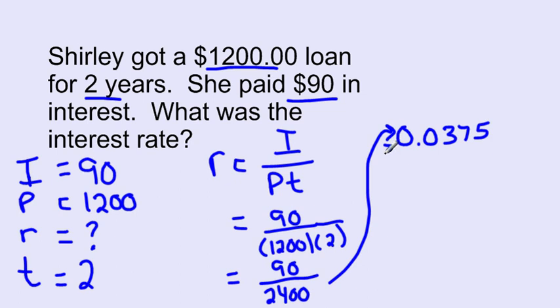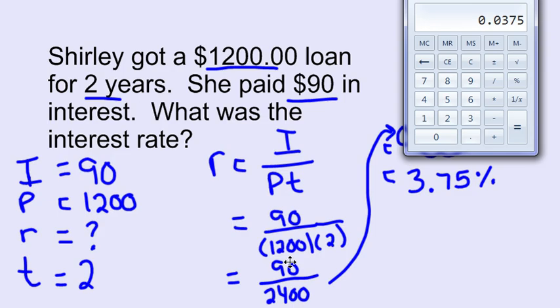That's the rate as a decimal. If we wanted it as a percent, we would just move the decimal place over two spots. And that's going to give us 3.75%. If you wanted, you could take that number in your calculator and just multiply it by 100 to find 3.75%.